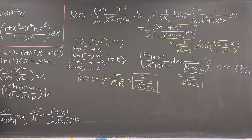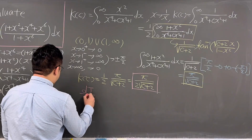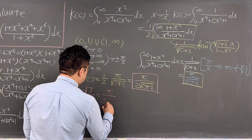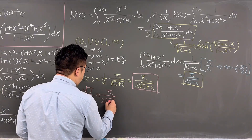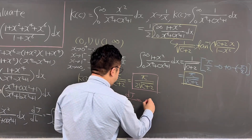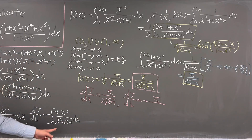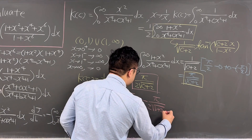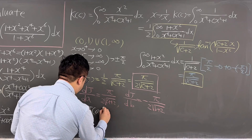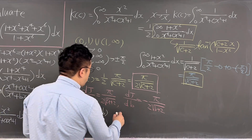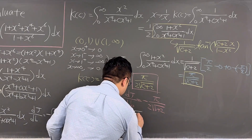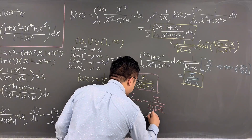Going back to dJ/da and dJ/db: dJ/da equals π / (2√(a+2)), and dJ/db equals −π / (2√(b+2)). So integrating, J(a,b) equals π times (√(a+2) − √(b+2)).